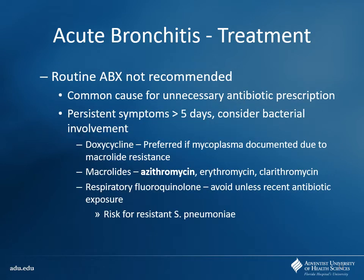Antibiotics are not routinely recommended. However, if they're having more persistent symptoms — greater than five days — that's where I start to consider more bacterial involvement. We want to cover for the normal respiratory stuff like strep pneumo and H. flu, but also atypicals. So what's going to help cover for atypicals? Macrolides are a big one. Tetracyclines are another. Those are two of the most common atypical-covering drug classes. Who do I not want to use tetracyclines in? Kids less than 8, and pregnant women — especially second and third trimester.